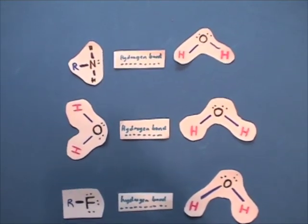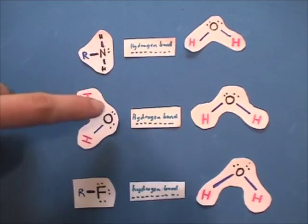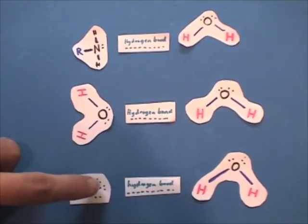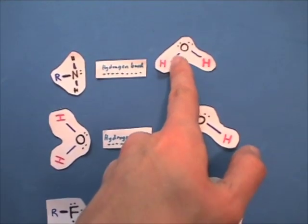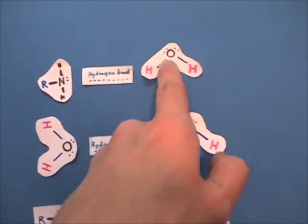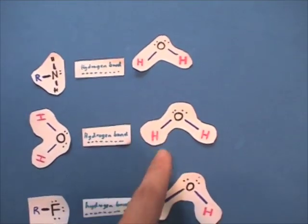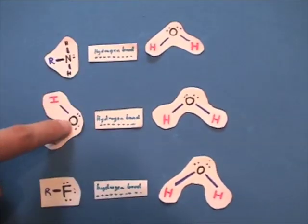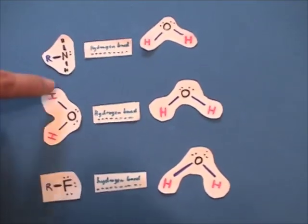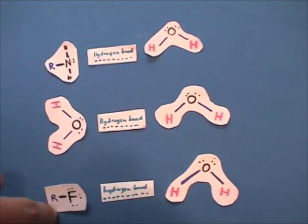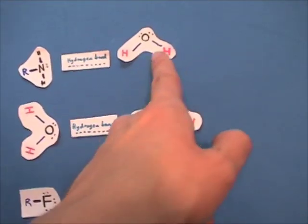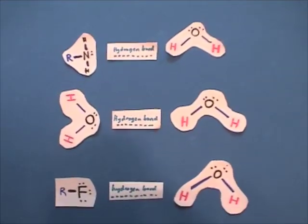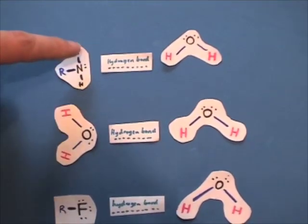So I'll show you this one more time, that nitrogen, oxygen, and fluorine can form hydrogen bonds with another molecule that has a hydrogen covalently bonded. So N-O-F. No F. We don't want any F's in school. N-O-F are able to form hydrogen bonds with a hydrogen that is covalently bonded in a molecule.